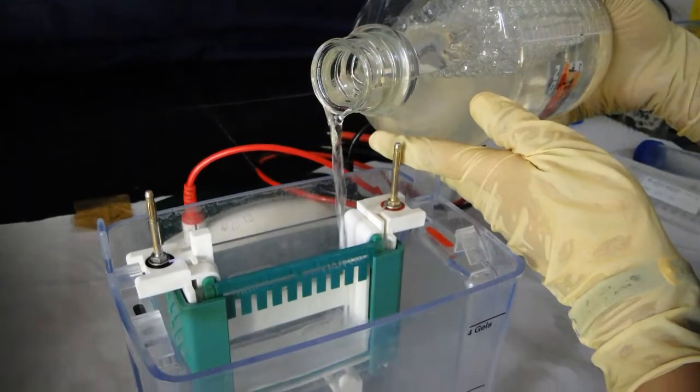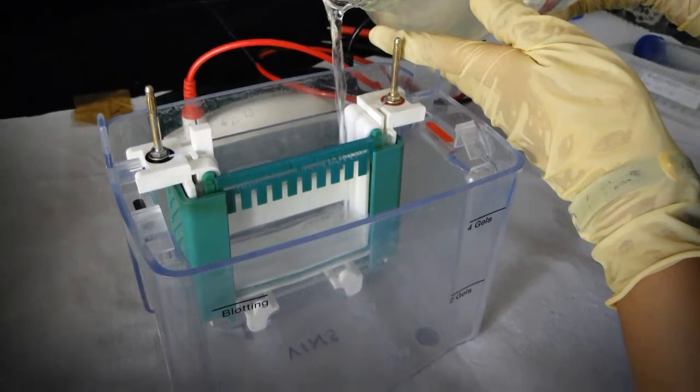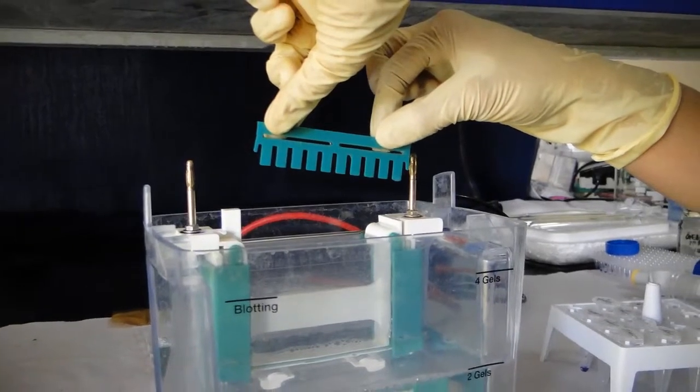Fill the inner chamber of the tank with 1x SDS running buffer of pH 8.3. Remove the comb carefully without breaking the well. Now the gel is ready to load the samples.